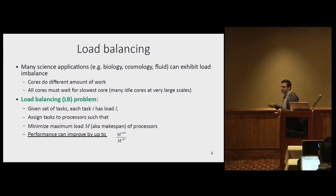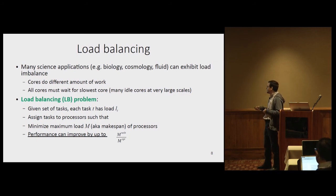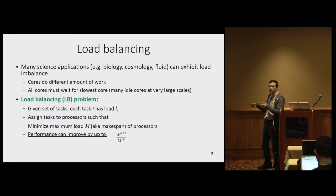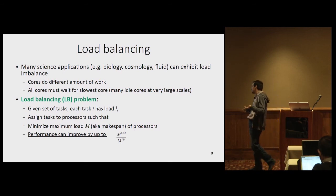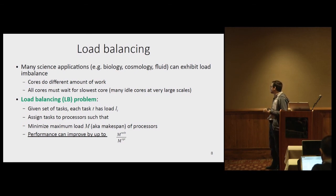The performance improvement you get depends on your application, but it's basically the max load without load balancing divided by the max load with optimal load balancing. If you have a ratio of two, you could get up to a 2x improvement. If the ratio is 10, you could get up to a 10x improvement.